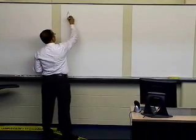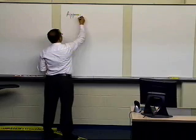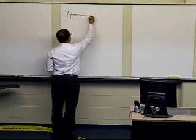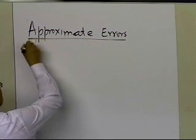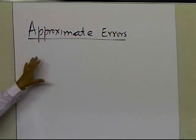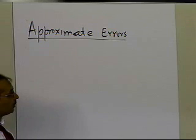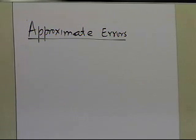In this segment, we're going to talk about approximate errors. The reason why we need to talk about approximate errors is because we won't have the luxury of knowing what the true values are, so somehow we have to calculate what the approximate errors are. Let's first define what approximate error is, and then we will talk about how to use that in an example.